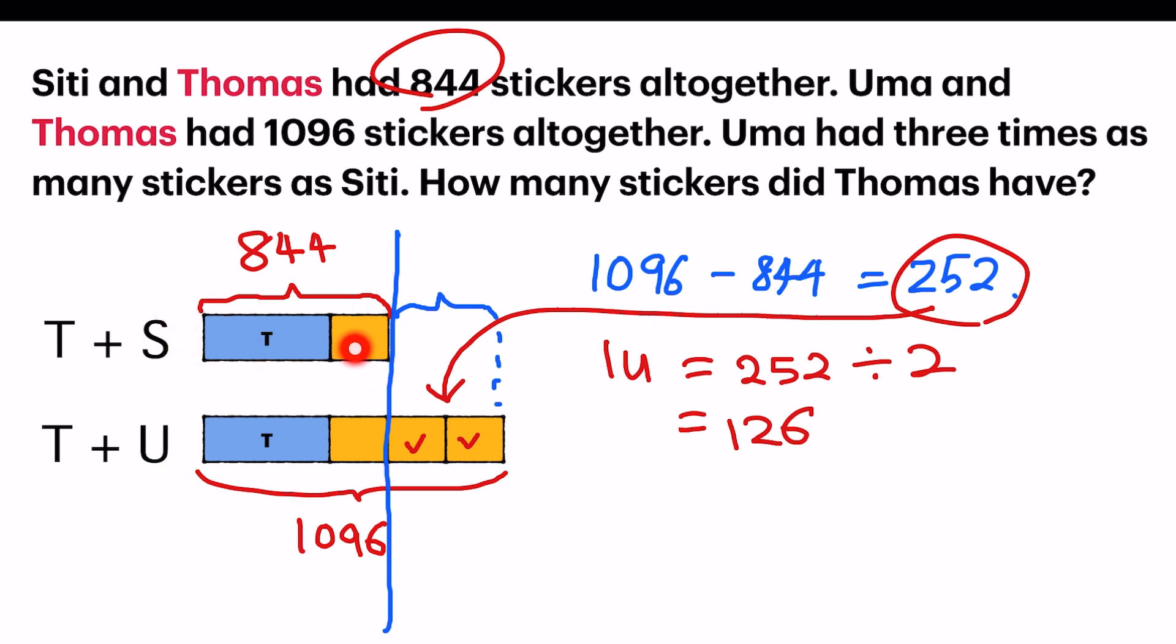So I'm going to use the first part, which is easier. Because I know one unit equals 126, and the total is 844. So my last step would be taking 844, subtract 126. I will get one blue portion, which is referring to Thomas' number of stickers. So 844 minus 126 gives me 718.